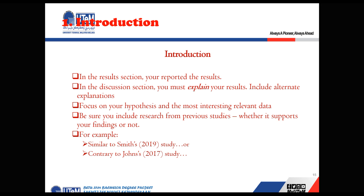It is not always compulsory that your results will match or be exactly the same as previous results. Sometimes they can be similar, and sometimes contrary to what others have shown. For example, you can write 'similar to Smith's 2019 study, our results show...' or 'contrary to John's 2017 study, the results show an improvement in XYZ experiment.' If your results differ from previous researchers, don't worry — as long as your methodology is correct, you can explain and show something different.